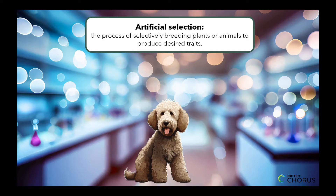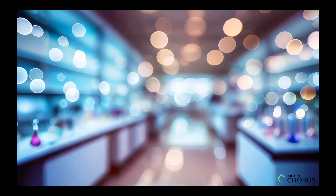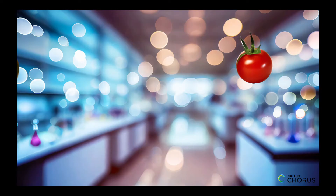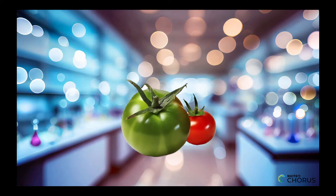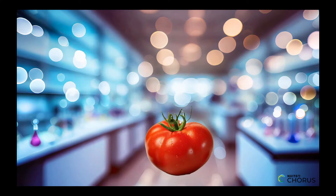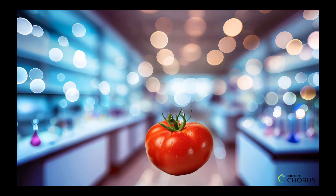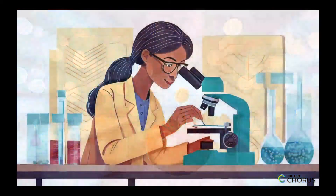For example, let's take this small red tomato and cross-breed it with this large green tomato. The new tomato is a large red tomato. This process has been used for centuries to create new varieties of plants with different shapes, sizes, and colors.